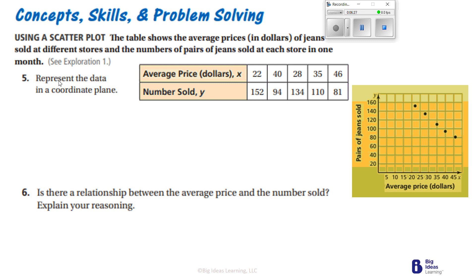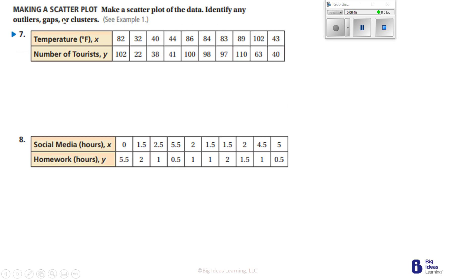Represent the data on the coordinate plane — that's all you had to do for number five. Let's go to number seven, which says: make a scatter plot of the data and identify any outliers, gaps, or clusters.